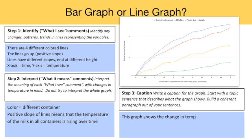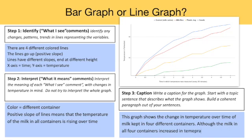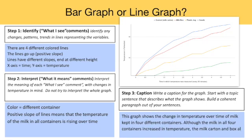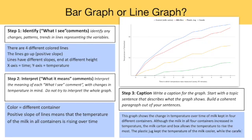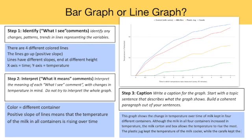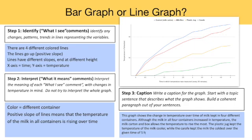Finally, step three is caption. Start with a topic sentence that describes what the graph shows, then build a coherent paragraph of what we've already written. So a student might say: this graph shows the change in temperature over time of milk kept in four different containers. Although the milk in all four containers increased in temperature, the milk carton and box allowed the temperature to rise the most. The plastic jug kept the temperature of milk cooler, while the carafe kept the milk the coldest over the given time of five hours.